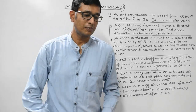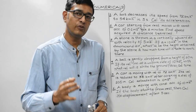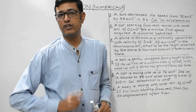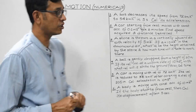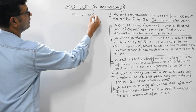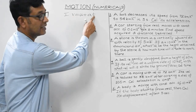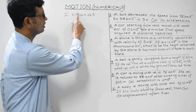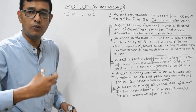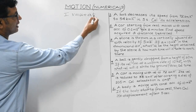In this session we will discuss some numericals based on the equations of motion. In the previous lecture we mathematically verified the equations of motion. There are three equations of motion. The first one is v = u + at, known as the velocity-time relationship, where t and v are variables and u and a are constants. These equations are valid for uniformly accelerated motion when the acceleration of the body is constant.